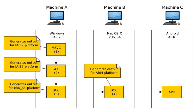The Canadian Cross is a technique for building cross-compilers for other machines. Given three machines A, B, and C, one uses machine A, e.g. running Windows XP on an IA-32 processor, to build a cross-compiler that runs on machine B, e.g. running Mac OS X on an x86-64 processor, to create executables for machine C, e.g. running Android on an ARM processor.